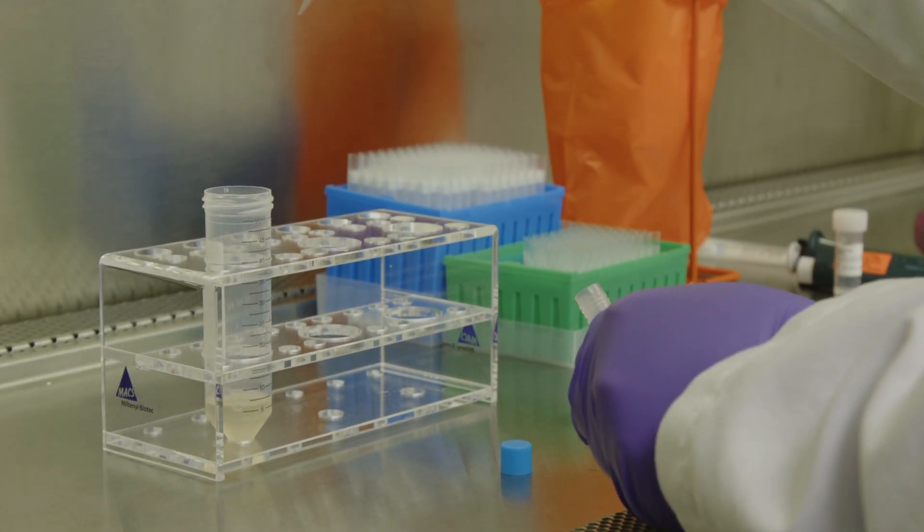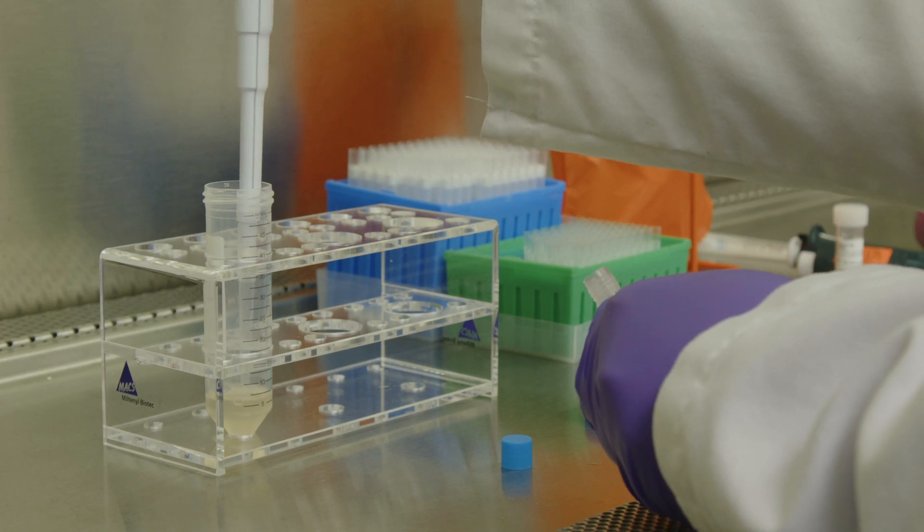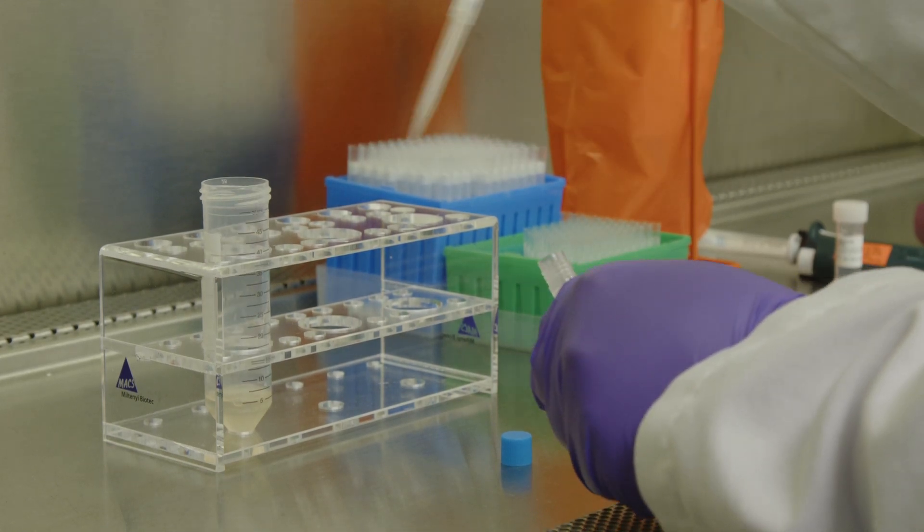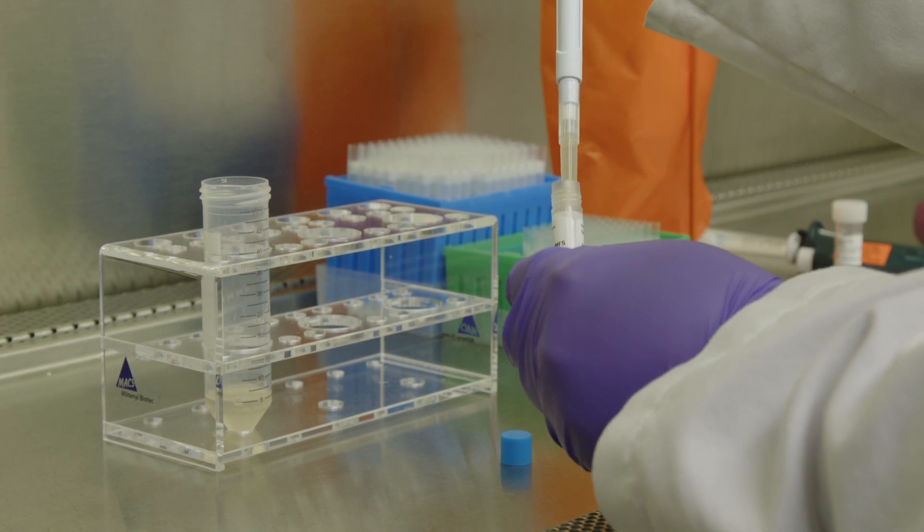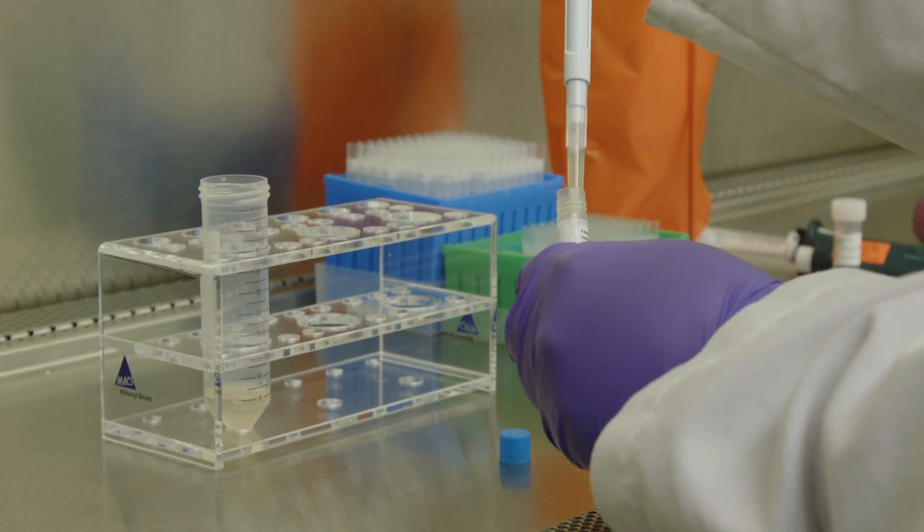Pipette 1 milliliter of medium from the conical tube to wash the cryovial for excess cells. Then pour it back into the conical tube. Gently invert the vial three times to mix the cells evenly.